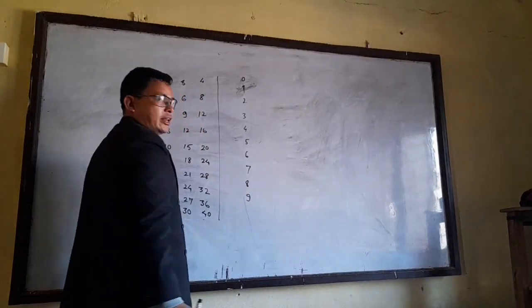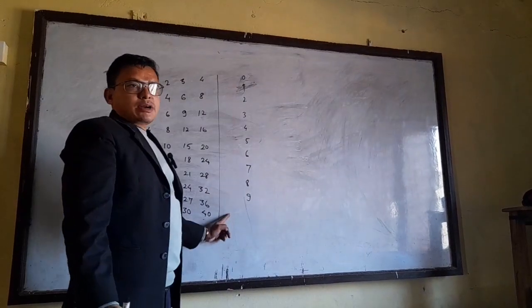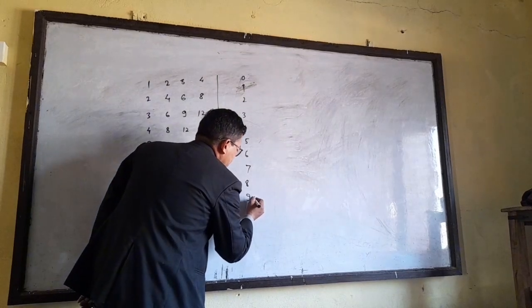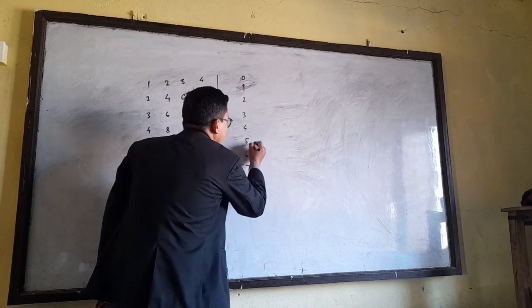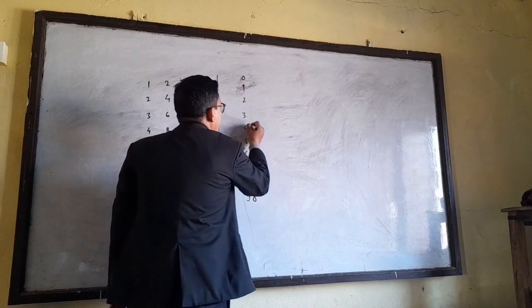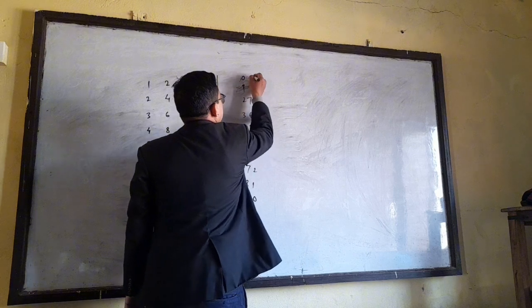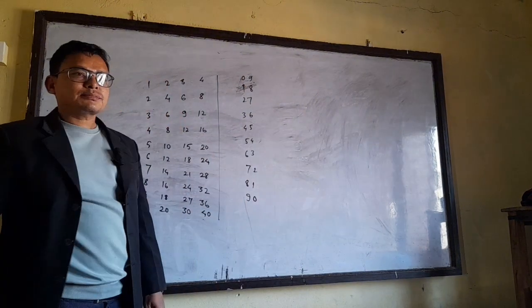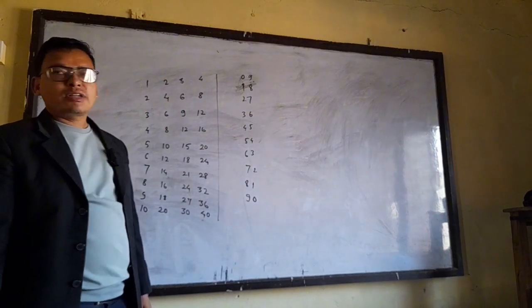Why not? 0 is the problem. 0, 1, 2, 3, 4, 5, 6, 7, 8, 9. 9, 1 is the problem. 9, 1 is the problem.